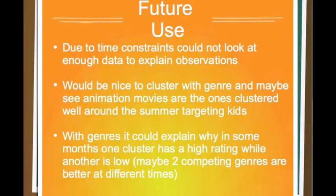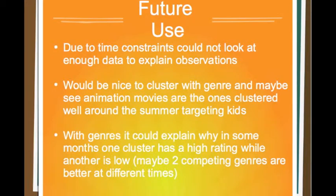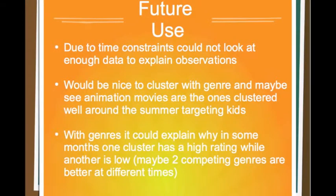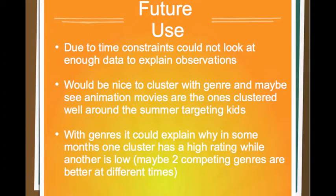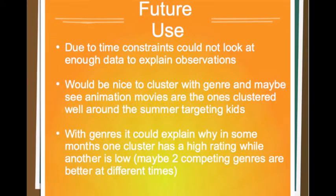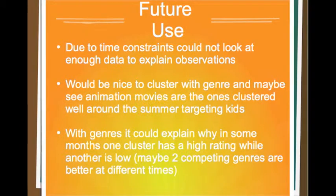It would be nice to take this data further. Due to time constraints, I couldn't really look too deeply into the data to explain why I saw what I saw. It would be nice to cluster based on genre — maybe that could explain why there's an average rating of 5.5 every 3 months. They could be animation movies or action movies. It might also explain why in certain clusters there are competing clusters — one with a low rating and one with a high rating. Maybe an action movie does better in March, while an animation movie does better in September.